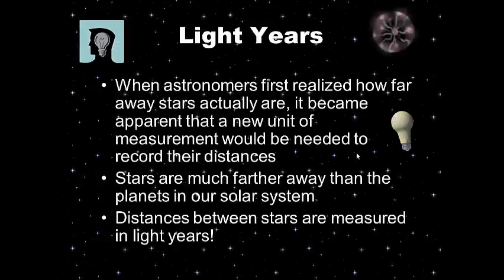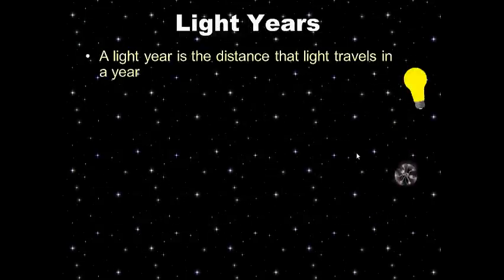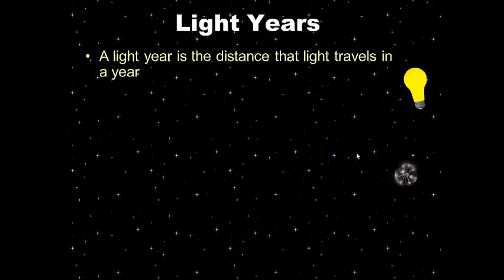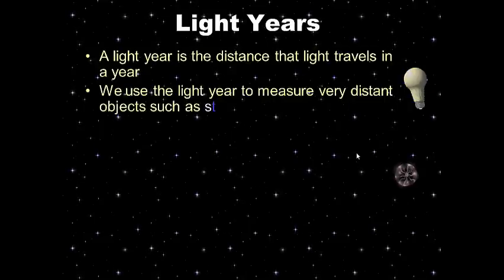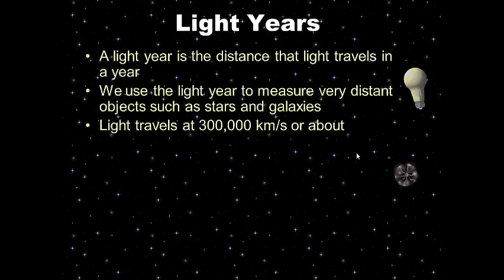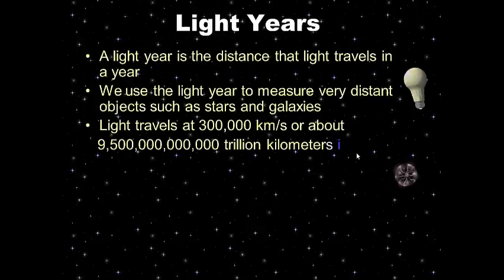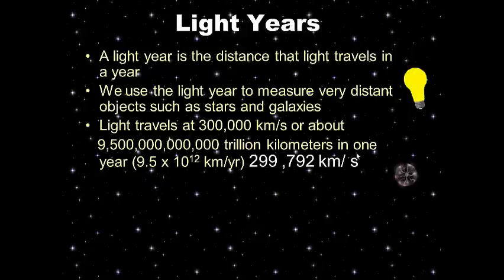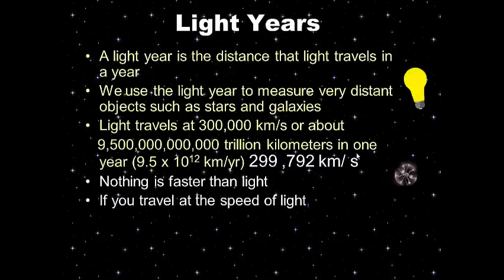Light seems fairly instantaneous to us, but it's actually not — we can measure the speed and it's very, very fast. A light year is the distance that light travels in a year. Just like a car traveling at 60 miles an hour covers a certain distance in a year, we use the light year to measure very distant objects such as stars and galaxies. Light travels at 300,000 kilometers per second, or about 9.5 trillion kilometers in one year. That's very far — nothing is faster than light.